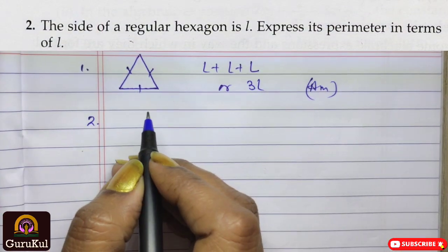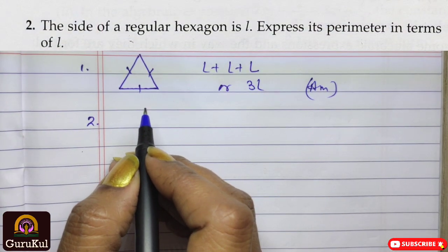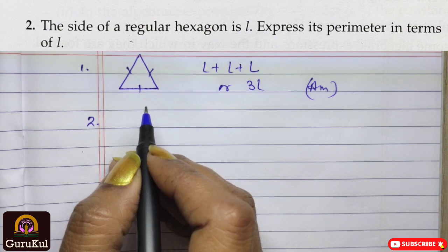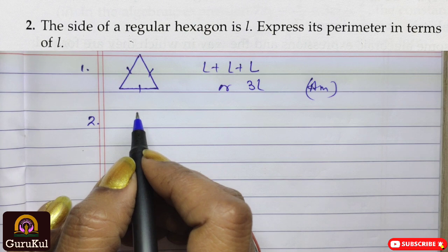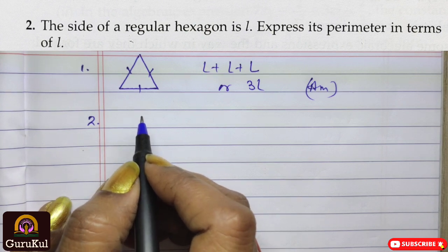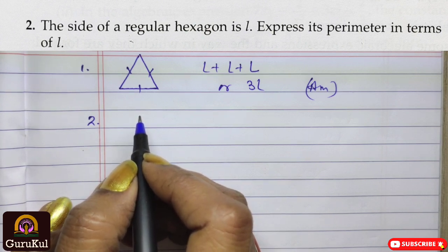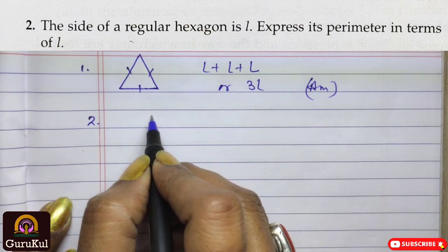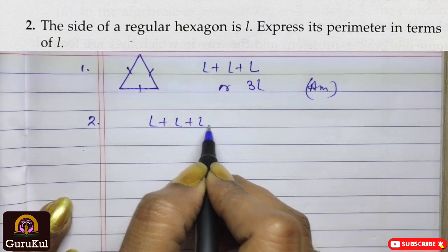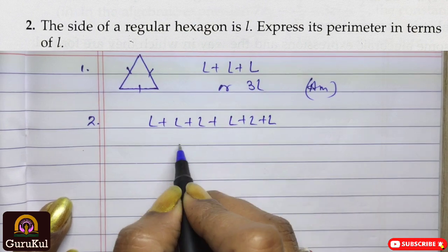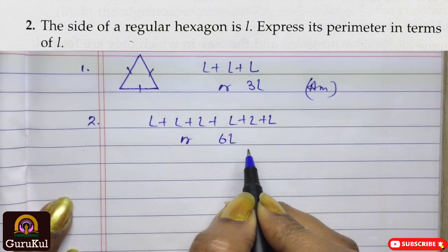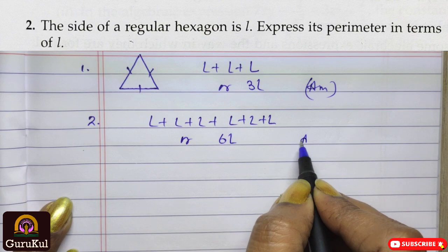Question number 2: the side of a regular hexagon is L. Express its perimeter in terms of L. We all know a hexagon is a regular hexagon, meaning all sides are equal, and a hexagon has six sides. That means L plus L plus L plus L plus L plus L, or 6L. So this is the perimeter.